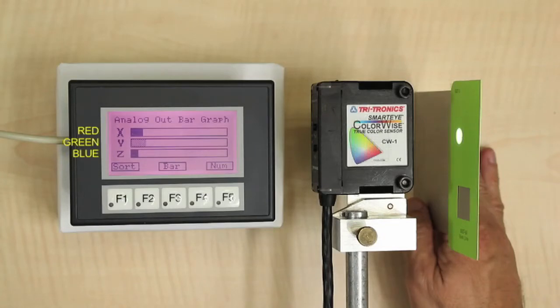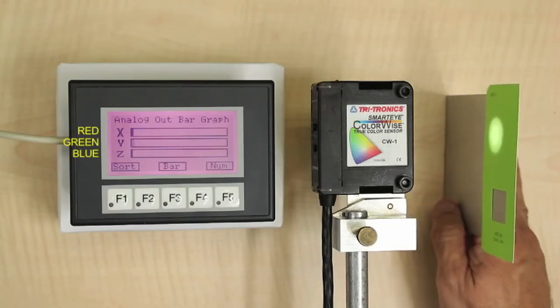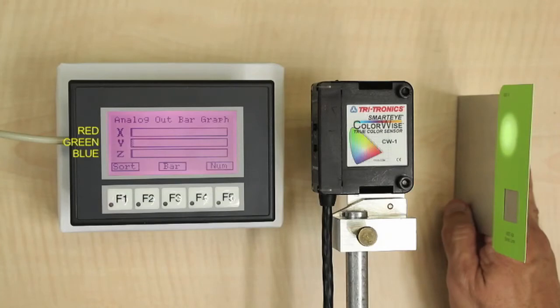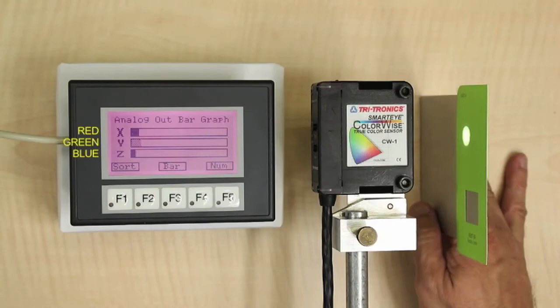Note that if taken to either extreme, too little signal or too much signal, then the ratios of red to green to blue will become distorted and break down.